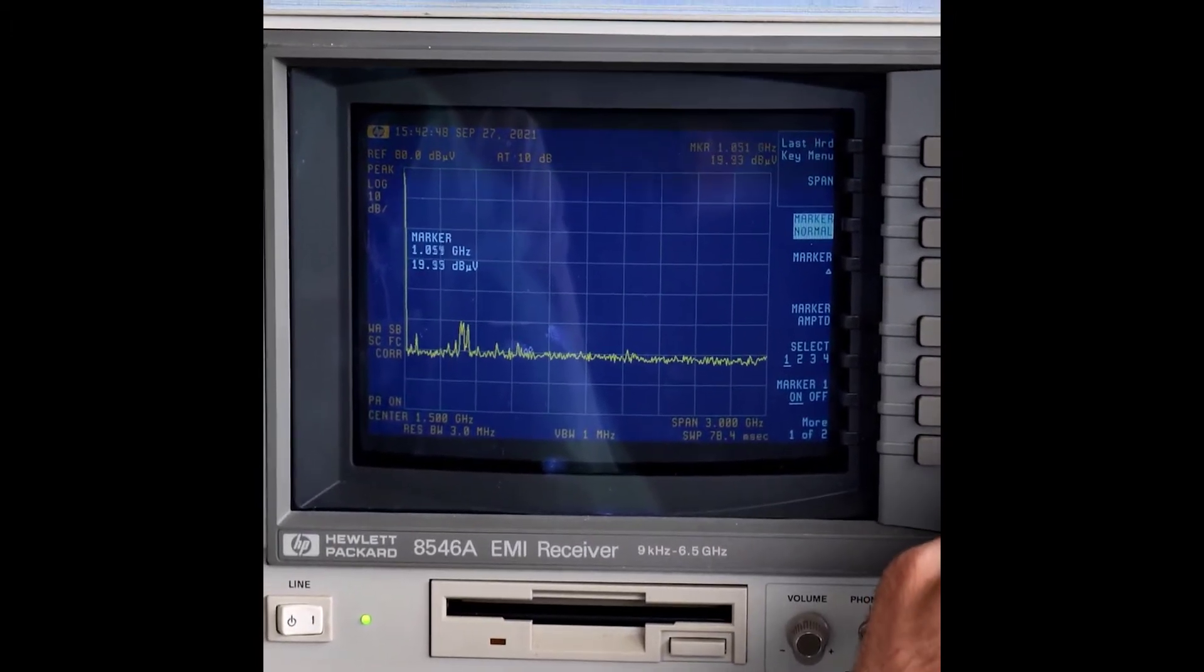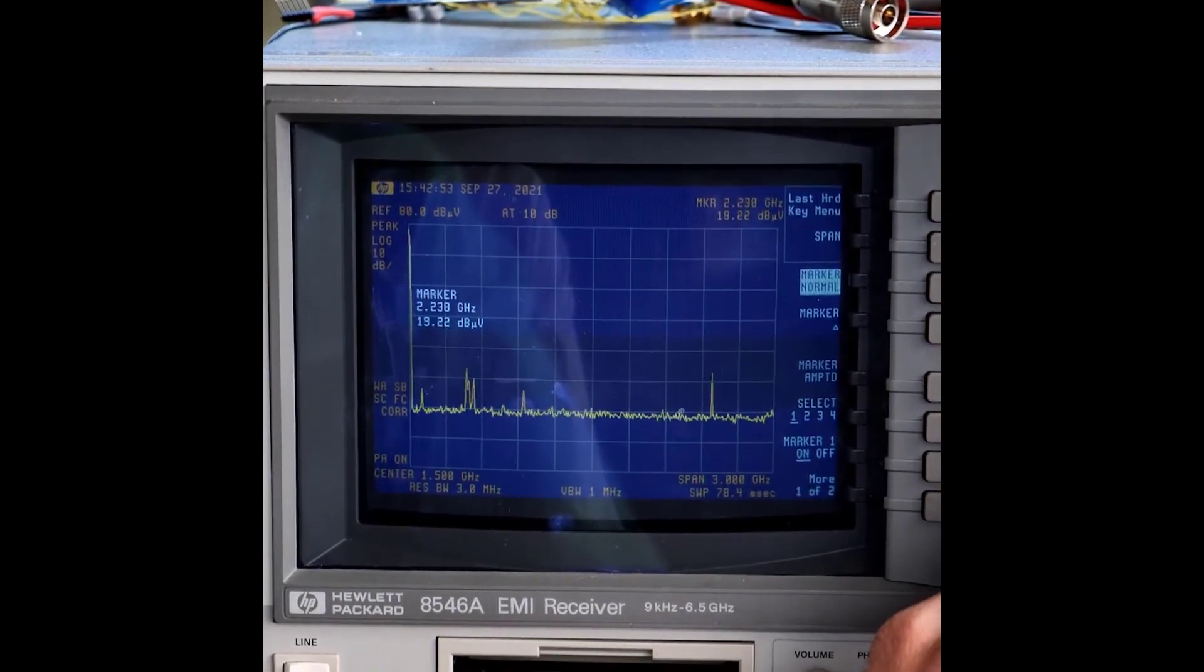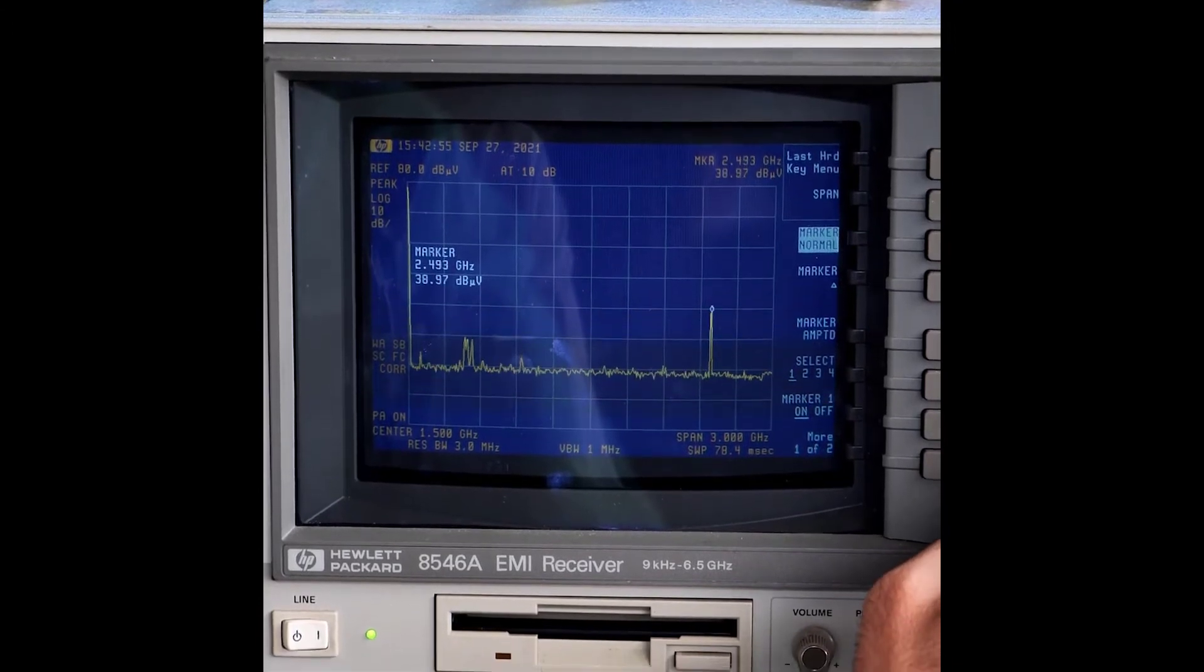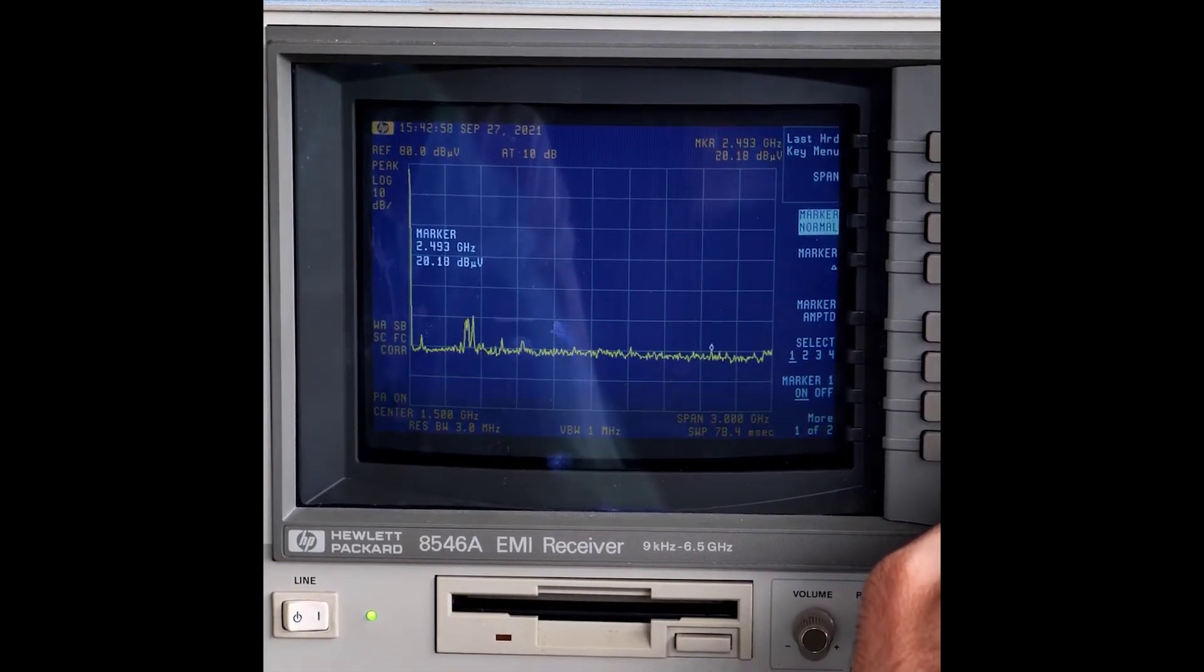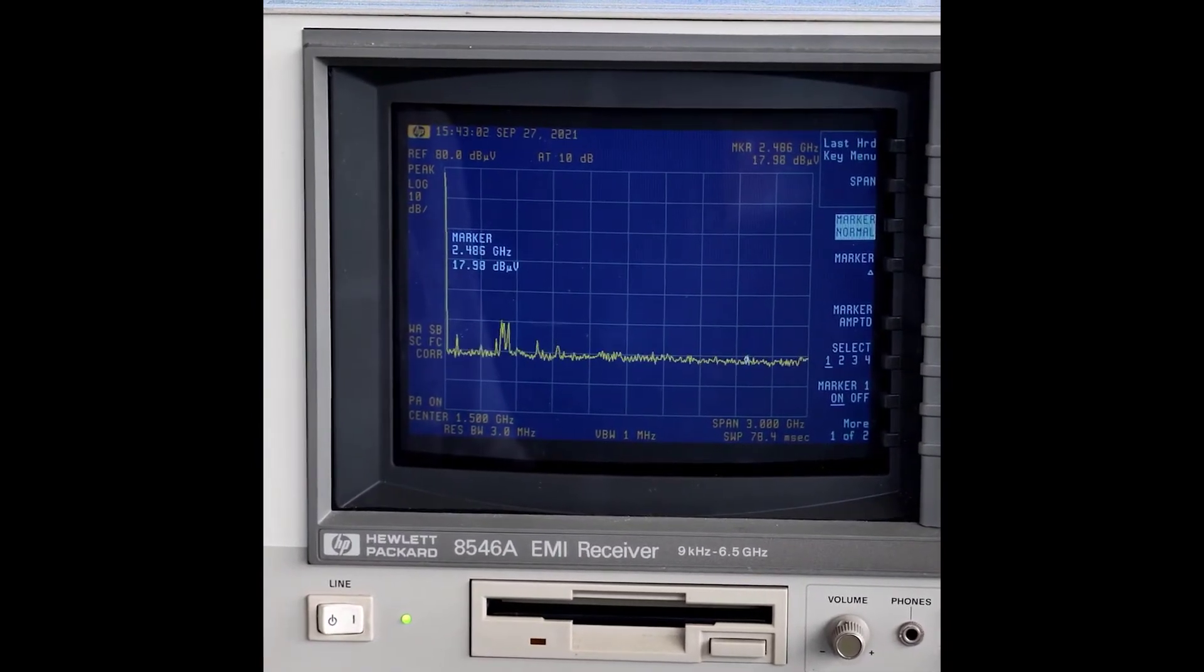This is what the spectrum looks like with the FlexBeam inside. It is very much significantly lower than what we get from a cell phone. The only thing we're still getting here is a little bit of Wi-Fi that's leaking into the box, but it is not emitted by the FlexBeam because the FlexBeam doesn't have Wi-Fi.